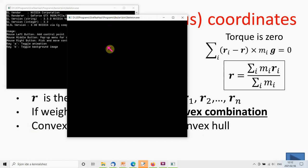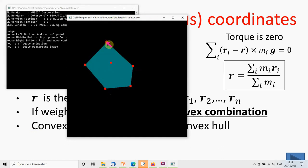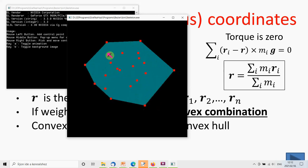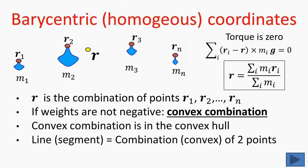Let us see what this convex hull means for a finite number of points. I place points on the plane and the system automatically computes the convex hull, which by definition is the minimum convex set that contains all the points. The convex hull is useful even in everyday life — if we want to protect our belongings with a fence, the fence should be built around the convex hull because the length of the fence is minimal. A line is the combination of two points, and if we restrict it to a convex combination, we obtain a line segment. Similarly, a plane is the combination of three points, and a triangle is the convex combination of its three vertices.